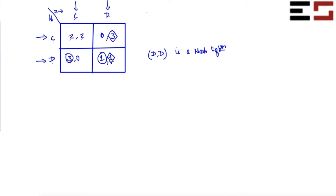DD is a Nash equilibrium, but it is not a Pareto efficient profile. Both players can benefit if they both deviate to CC. Nash equilibrium doesn't necessarily mean it's going to be efficient — it's possible that Nash equilibrium is not efficient, as we can see here. Both players are playing their best response to each other's action and yet achieving an outcome which is not efficient. Many games fall into this category.